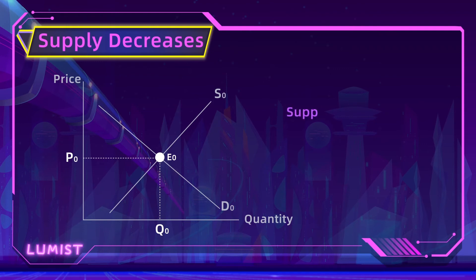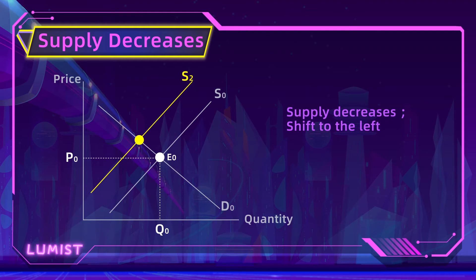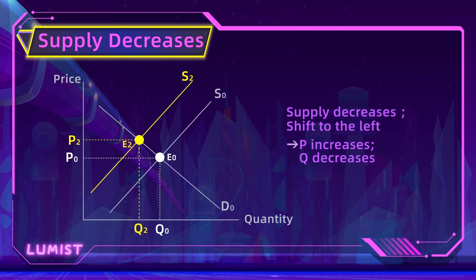Conversely, if supply decreases and shifts towards the left, then we get a new equilibrium point at E2. This has a corresponding price P2 which is higher than the old P0. However, quantity actually falls from Q0 to Q2. So price increases while quantity decreases.